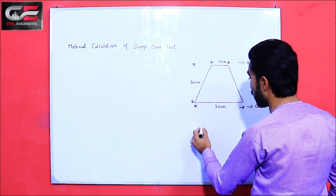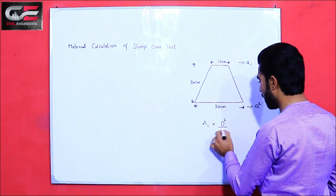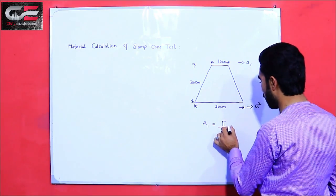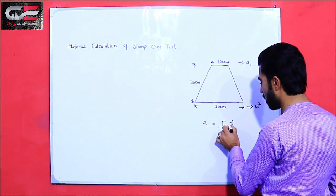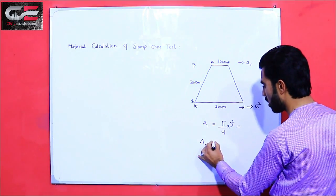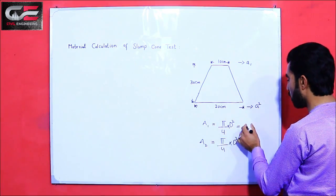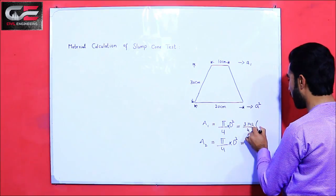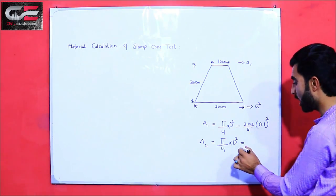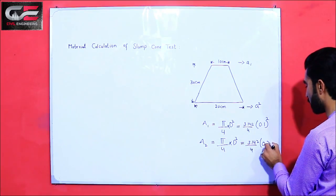How do we find the area? The area formula is: Area = π/4 × d². So Area 1: 3.142 / 4 × (0.1)² meters squared. And Area 2: 3.142 / 4 × (0.2)² meters squared.